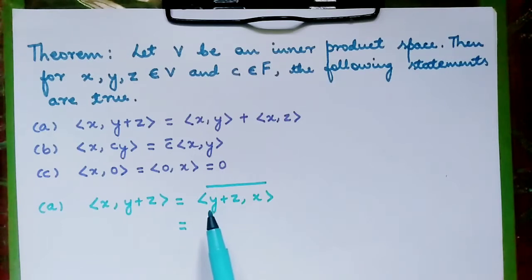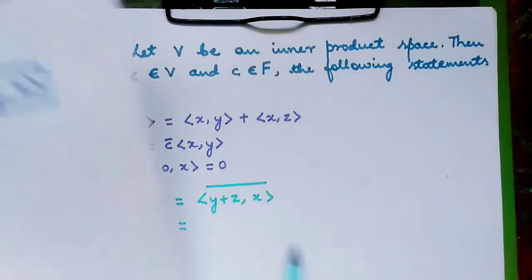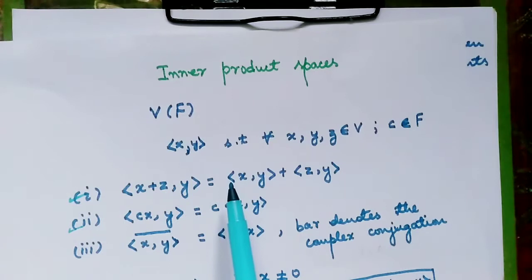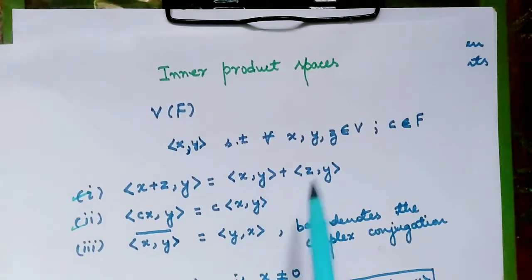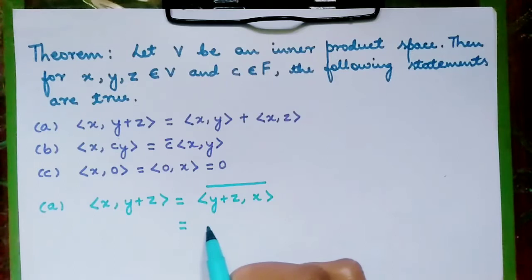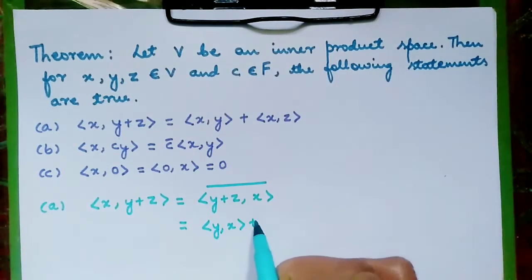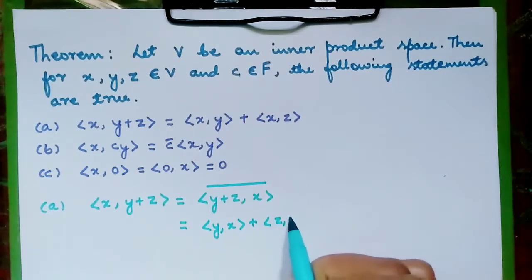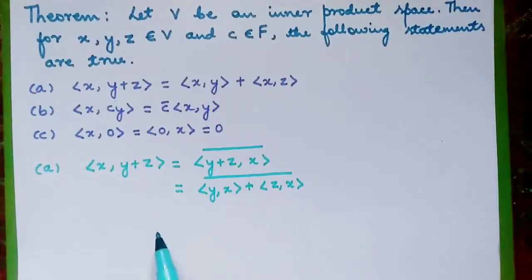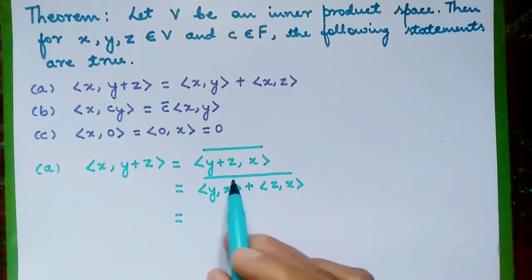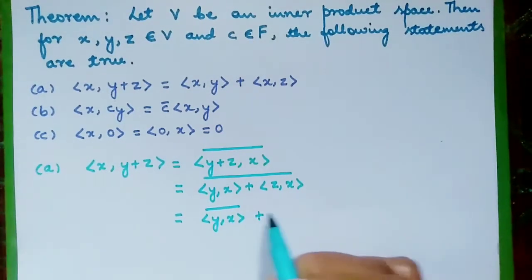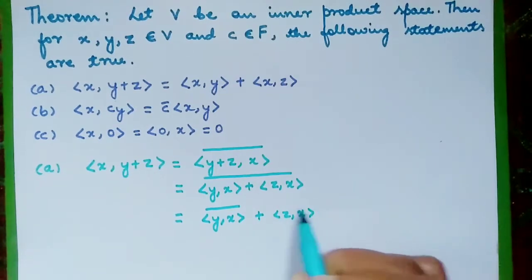We know that ⟨y+z, x⟩ is similar to ⟨x+z, y⟩, which is equal to ⟨x, y⟩ + ⟨z, y⟩. Using this, we can write it as ⟨y,x⟩ + ⟨z,x⟩ with the complex conjugation bar. The complex conjugation of ⟨x,y⟩ is exactly equal to ⟨y+z, x⟩ + ⟨z,x⟩ with the bar.